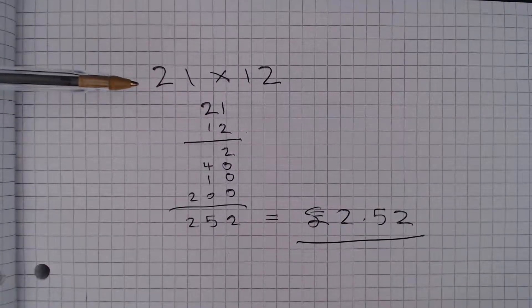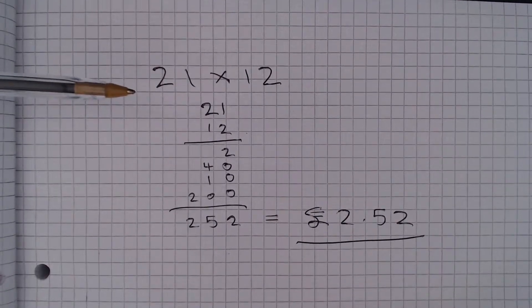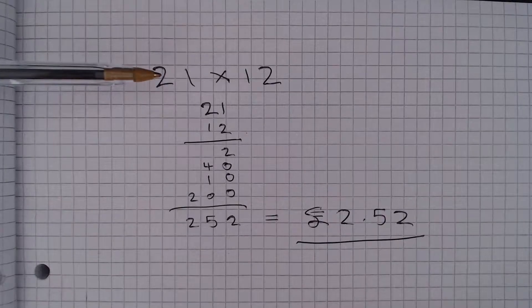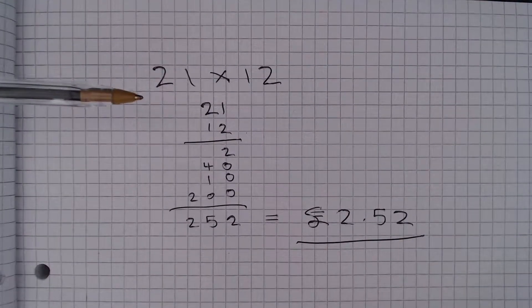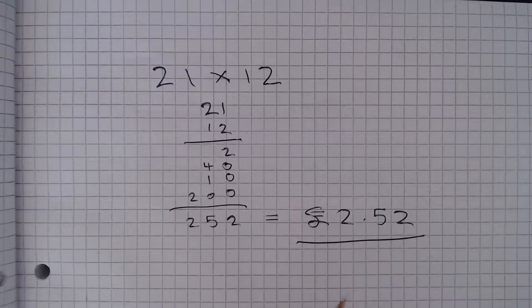So 12 times 2 is 24, so times 20 is 240, plus another 12 would give us 252, and then we would divide our answer by 100 to get £2.52.